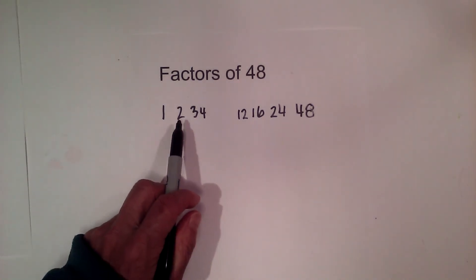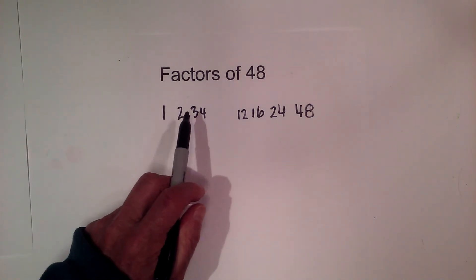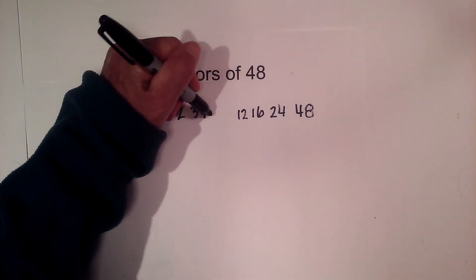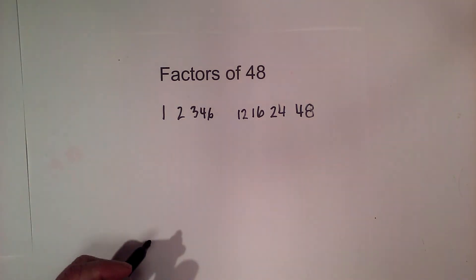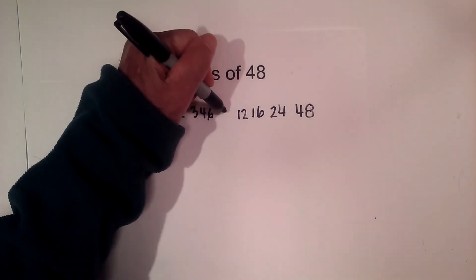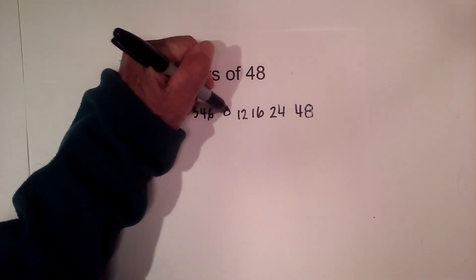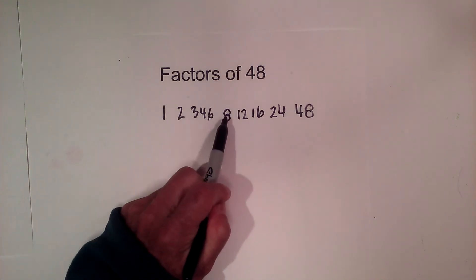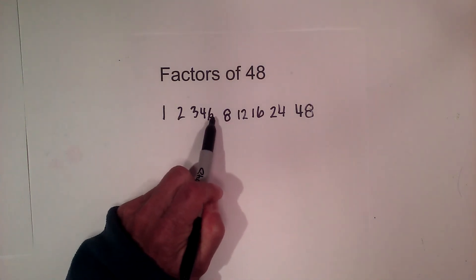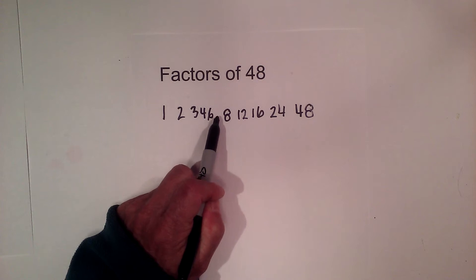Since 2 and 3 go into 48, 6 goes into 48, and 6 times 8 is 48. Now you can see I'm down to just one more number, and that is 7.